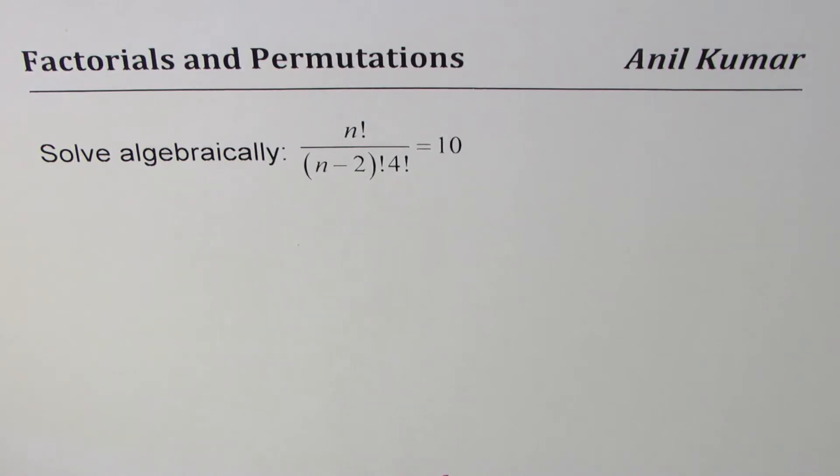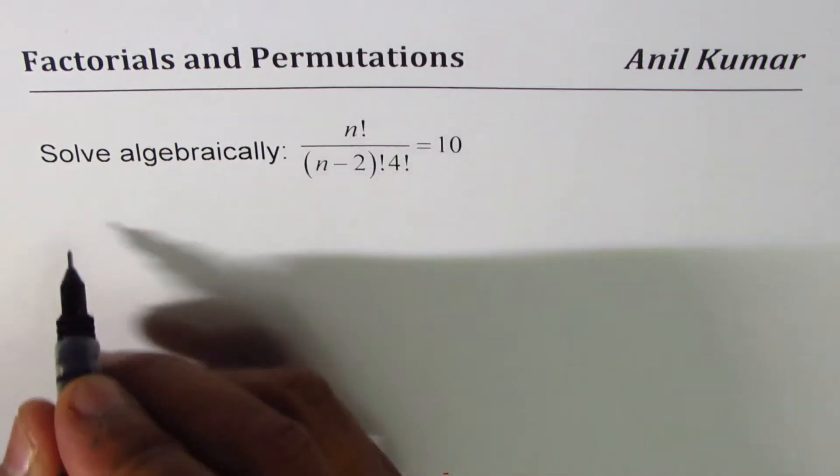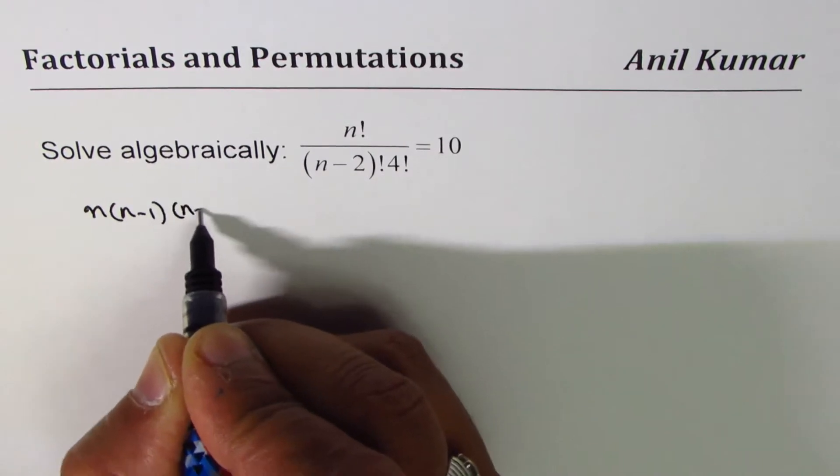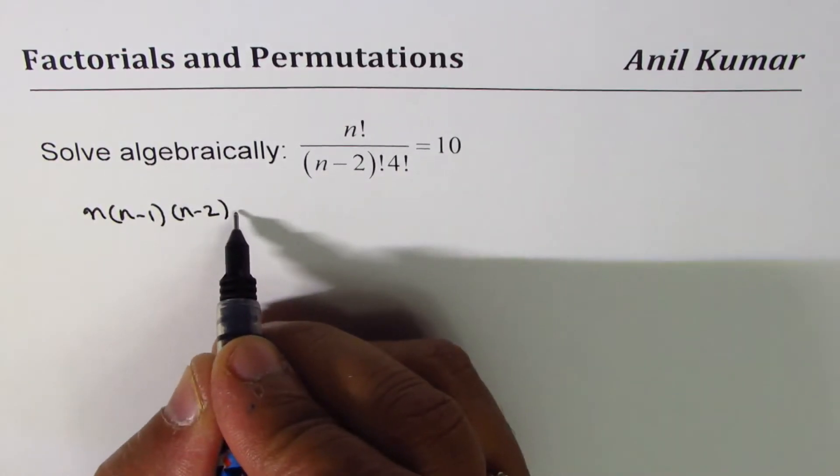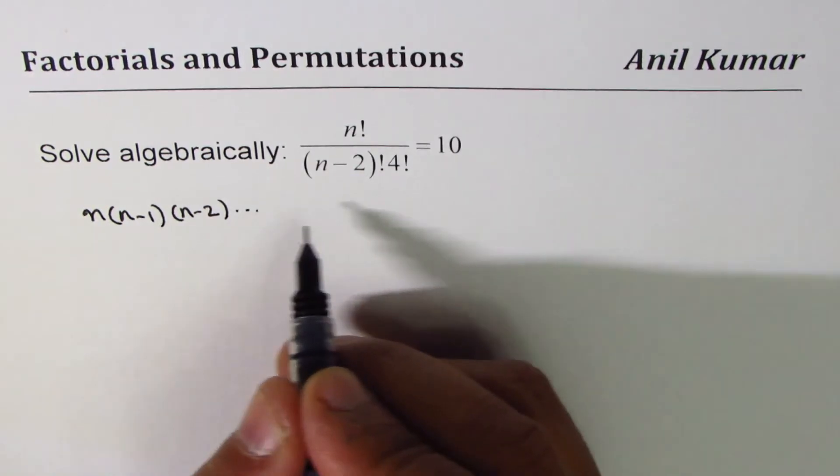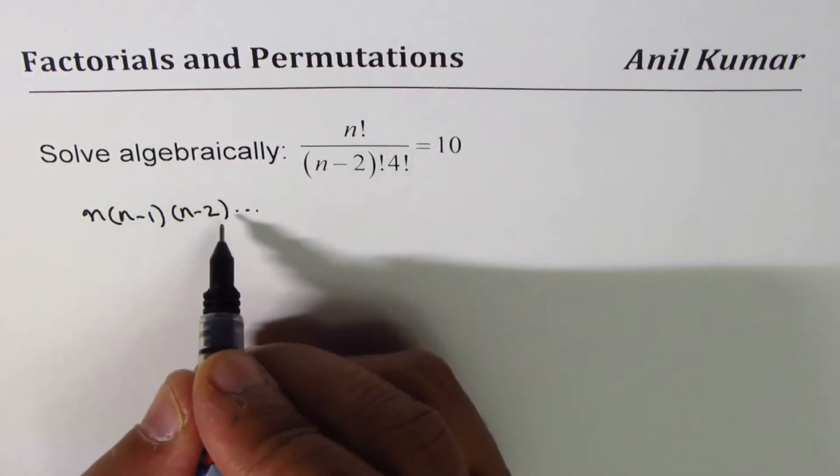n factorial really means n times (n minus 1) times (n minus 2) and so on. Now since we have (n minus 2) here, factorial is better to write n factorial as n times (n minus 1) times (n minus 2) factorial.